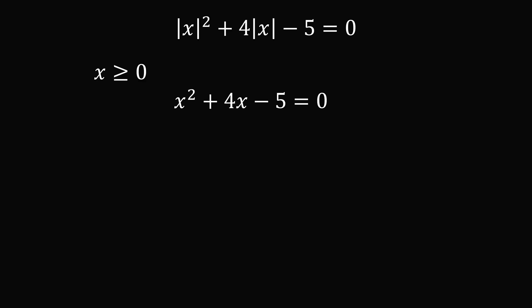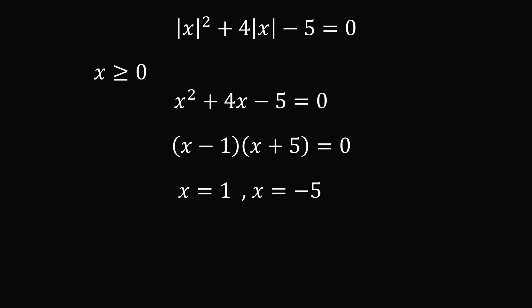We can solve this quadratic equation by factoring. We get x minus 1 multiplied by x plus 5 is equal to 0. This gives the two solutions x is equal to 1 and x is equal to negative 5. But in this case, we've assumed that x was greater than or equal to 0, so we need to eliminate the extraneous solution x is equal to negative 5. Only x is equal to 1 is a solution in this case.